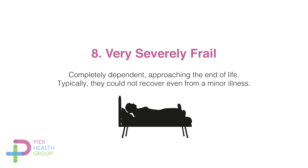Number eight has a picture of somebody in a bed. This category is for people who are severely frail and completely dependent on you for all their needs. Please don't just look at the picture and assume everyone in a bed is very severely frail — residents can still get out and sit in a chair with your support. People in this category are really approaching the end of their life, and if they were to develop an infection, the chances of recovery would be minimal.